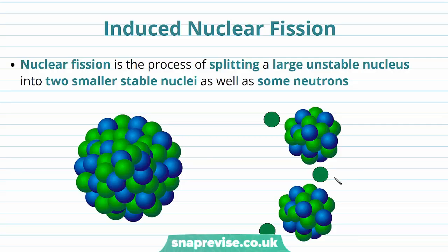Nuclear fission can occur spontaneously but can also be induced. Remember that nuclear fission is the process of splitting a large unstable nucleus into two smaller stable nuclei as well as some neutrons.